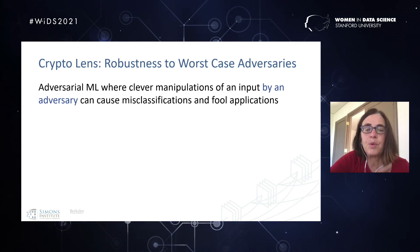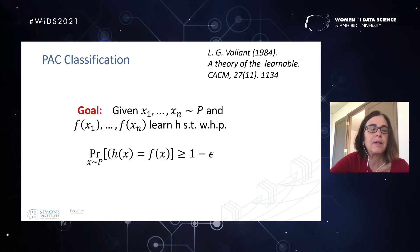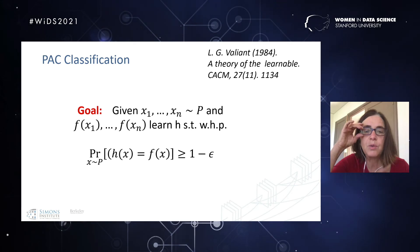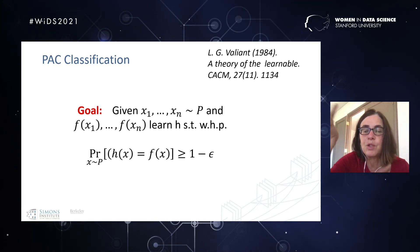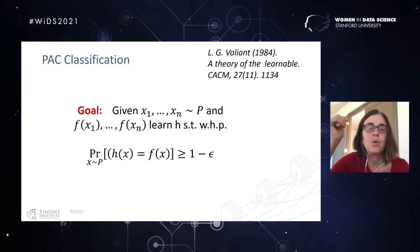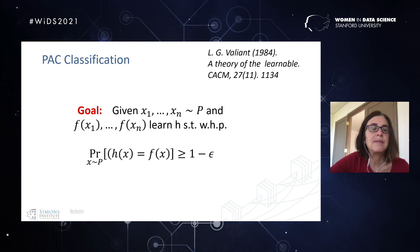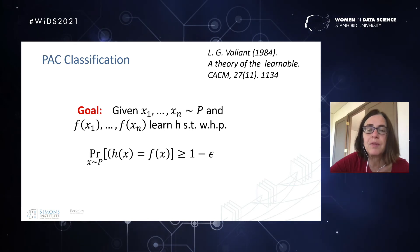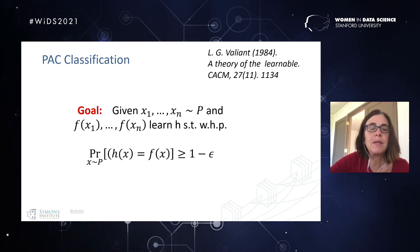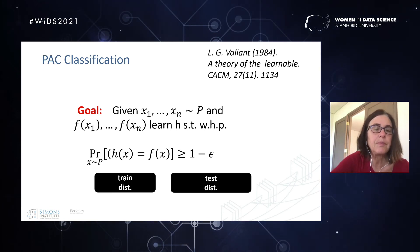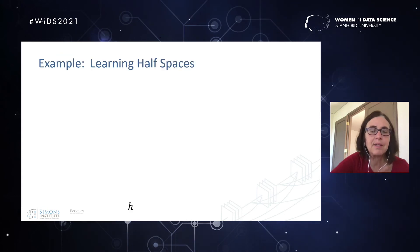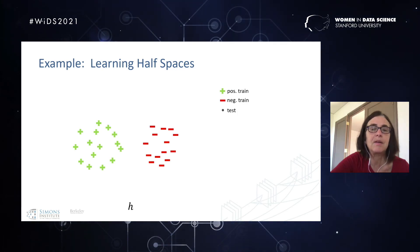Current approaches to combating this typically assume we know the domain of attacks — rotations, shifts of an image, and so forth — and if we know the class of attacks we can protect against it. But from a cryptographer's perspective, how can you know what the class of attacks is? The whole point of an adversary is that you don't know what they're doing. We want guarantees with respect to arbitrary deviations from what the algorithm was trained to recognize. The original PAC learning definition by Valiant assumes training and test data come from the same distribution p, but that's not always the case.